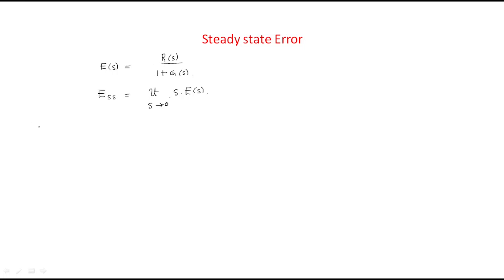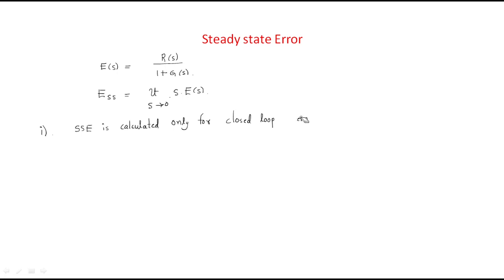The first point regarding steady-state error: it should be calculated only for a closed-loop stable system. It must be a closed-loop system and it must be a stable system. If it is not a closed-loop system, it is not possible to calculate steady-state error.